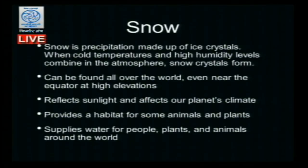Looking at the definition of snow: snow is precipitation made up of ice crystals. The conditions needed for snow are very cold temperature and high humidity. When these two factors come together, there is a possibility of formation of snow crystals or snowflakes. These are very light, not compact, not solid like ice — they are soft to touch. Snow plays a very important role — melting of snow provides fresh water on which many states and countries are dependent.